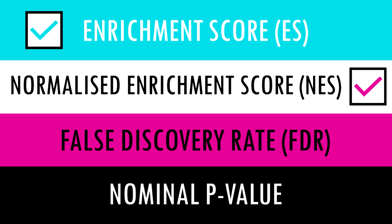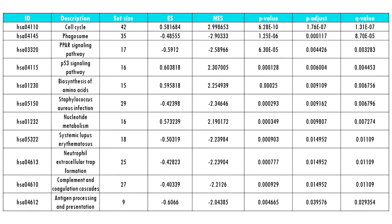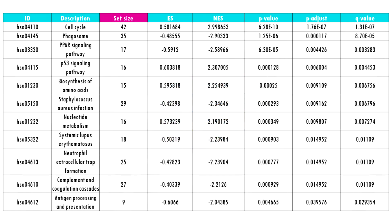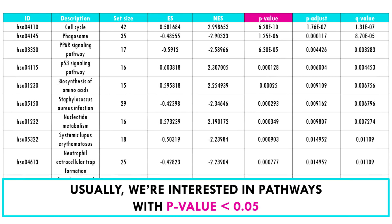Let me show you what typical GSEA results look like. These are GSEA results of differential gene expression analysis of lung cancer cells versus normal cells. The table has the list of pathways tested, the pathway ID from the KEGG database, the set size telling you how many genes are involved in that pathway, and the enrichment score and normalized enrichment score, which tells us if they are up- or downregulated in lung cancer cells versus healthy cells. For each pathway we also get a measure of significance: the p-value.